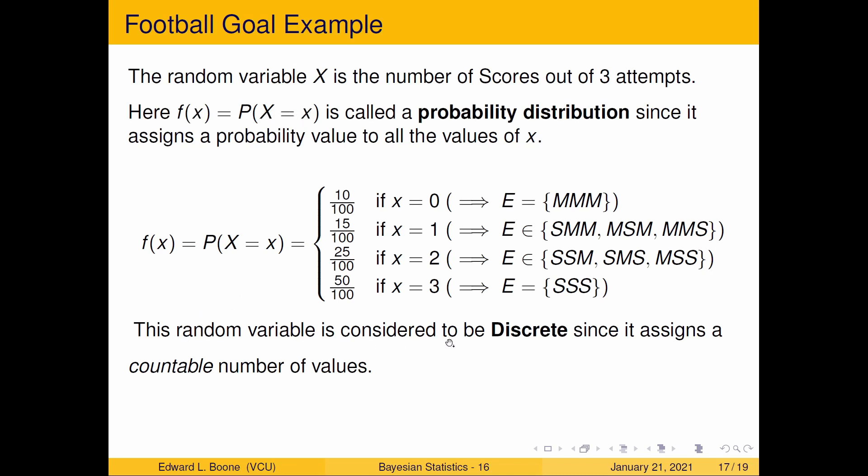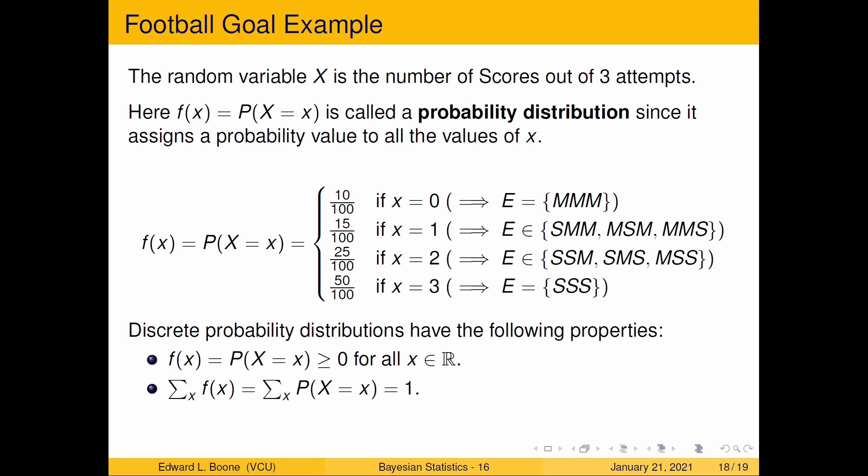And here the random variable is considered to be discrete since it assigns a countable number of values. X equals zero, one, two, and three. You can count those. There's four numbers there. If it's not countable, we'll talk about that in the next video. Some properties of these probability distributions is these probabilities are always greater than or equal to zero. And that should be obvious because that comes from the first one of the axioms of probability. And here it says the sum of the probabilities sum to one. And that is also in here because we've covered all the values of X, which means that's going to map backwards to all of the sample space, which should give us a probability of our sample space is equal to one.